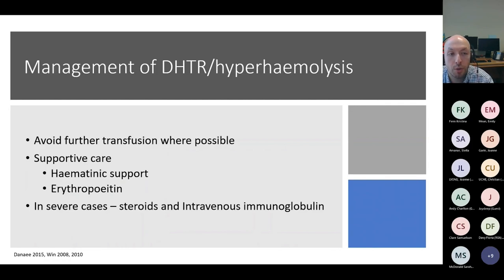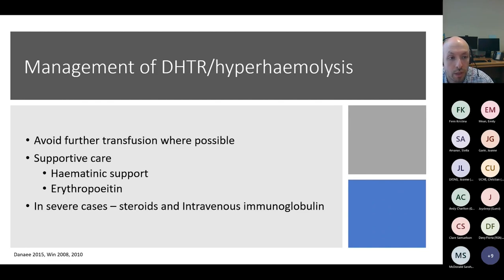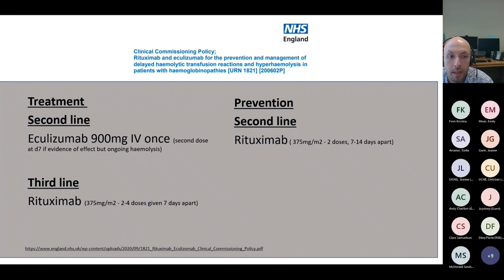In terms of management of both delayed hemolytic transfusion reactions and hyperhemolysis, it is best to avoid further transfusion and provide supportive care with hematinics and erythropoietin. When there is ongoing hemolysis, it is recommended to give steroids and intravenous immunoglobulin. There is also an NHS England commissioning policy on the use of rituximab and eculizumab as of 2020.